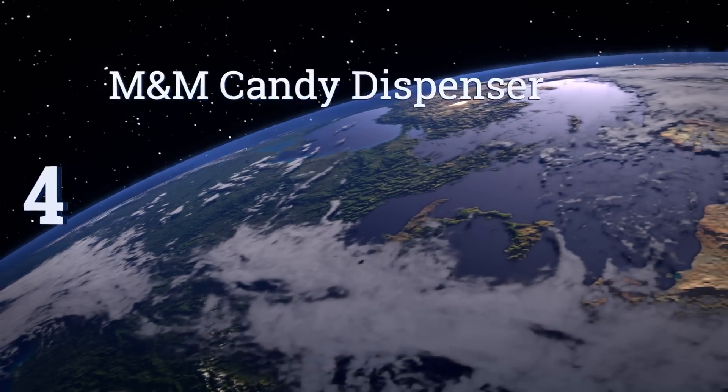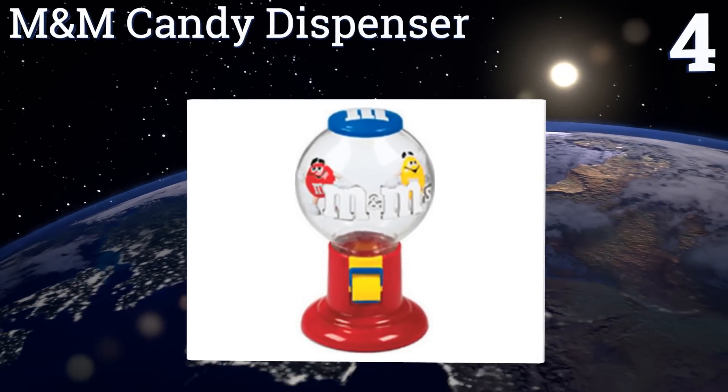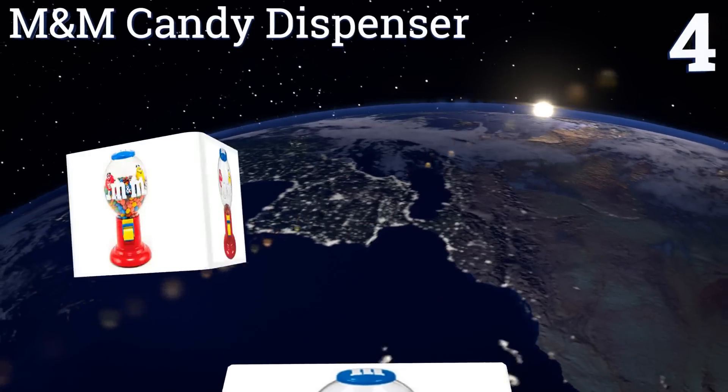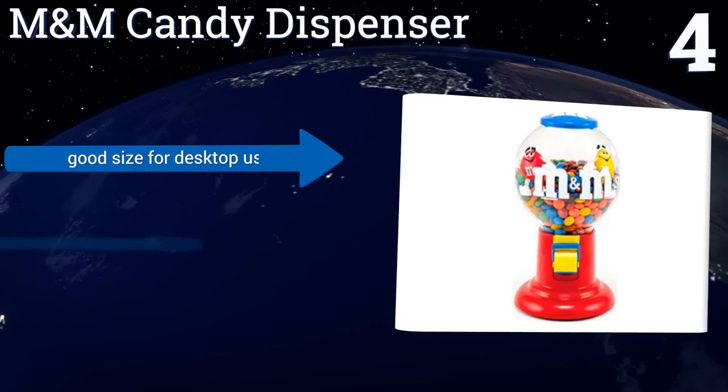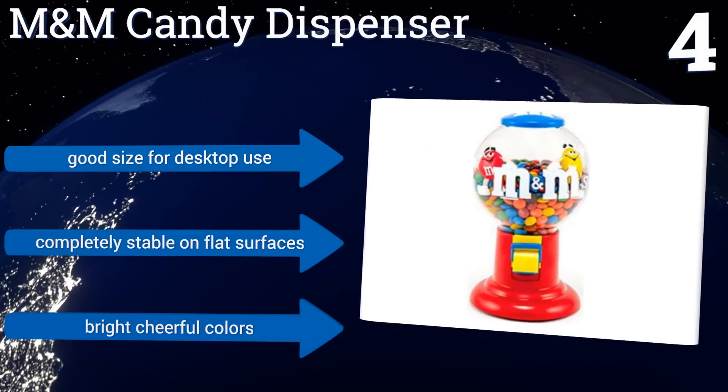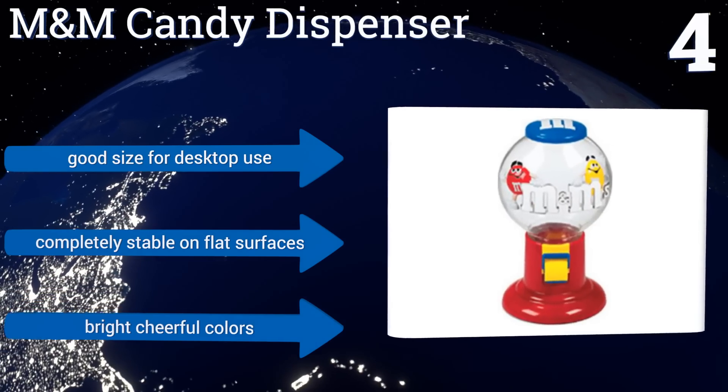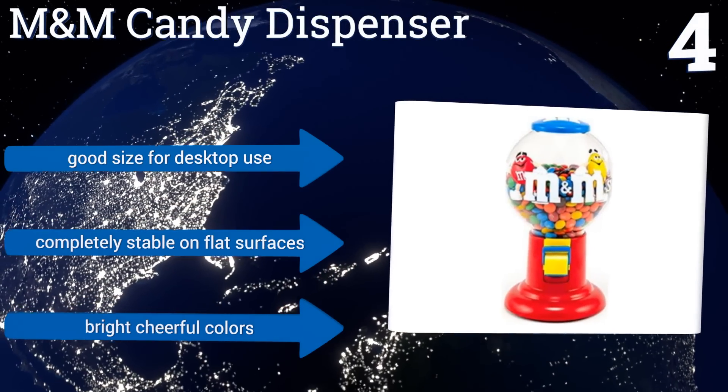At number 4, the M&M Candy Dispenser sports the classic vintage gumball machine style. It's a popular choice thanks to the durable plastic construction that makes it lightweight enough to take wherever you go. The top quickly pops off for effortless refills. It's a good size for desktop use and is completely stable on flat surfaces. It comes in bright cheerful colors.